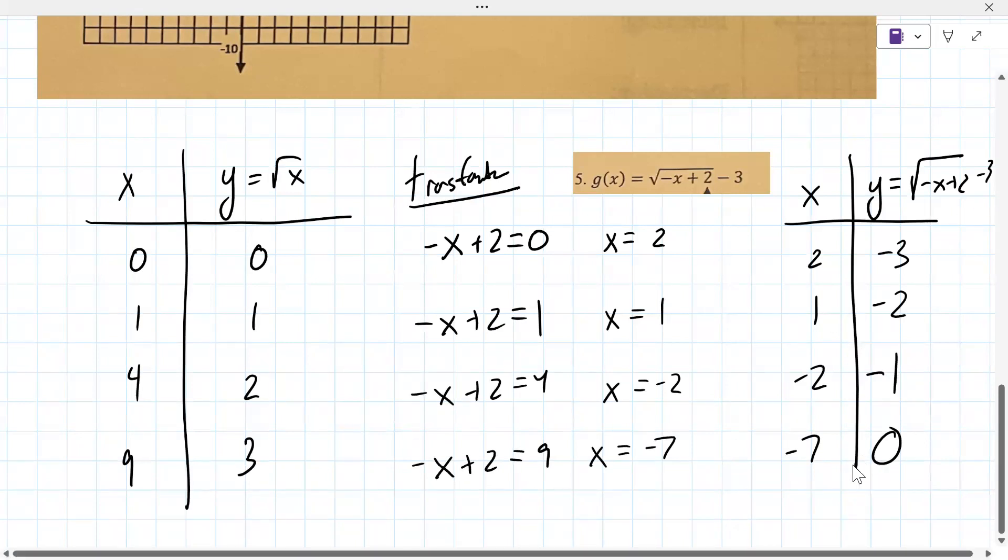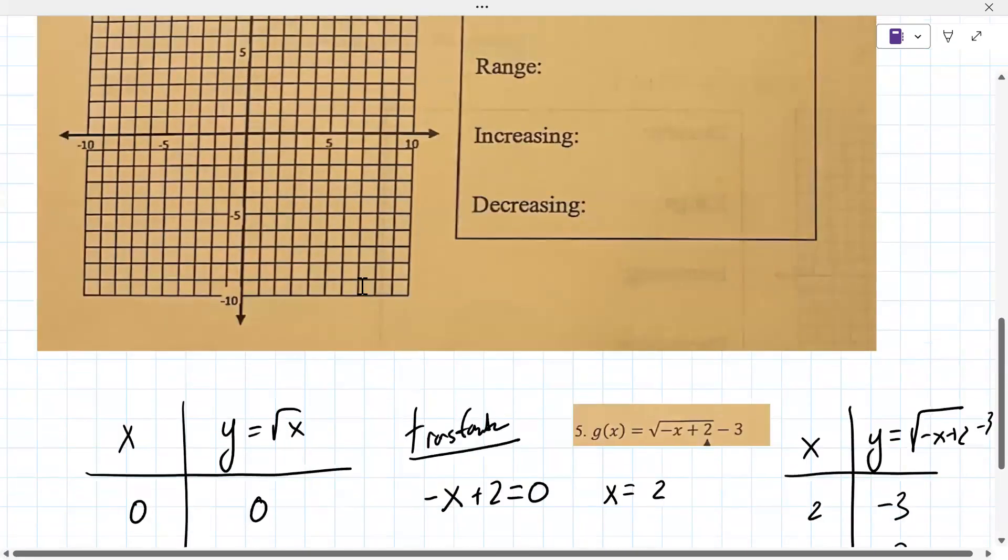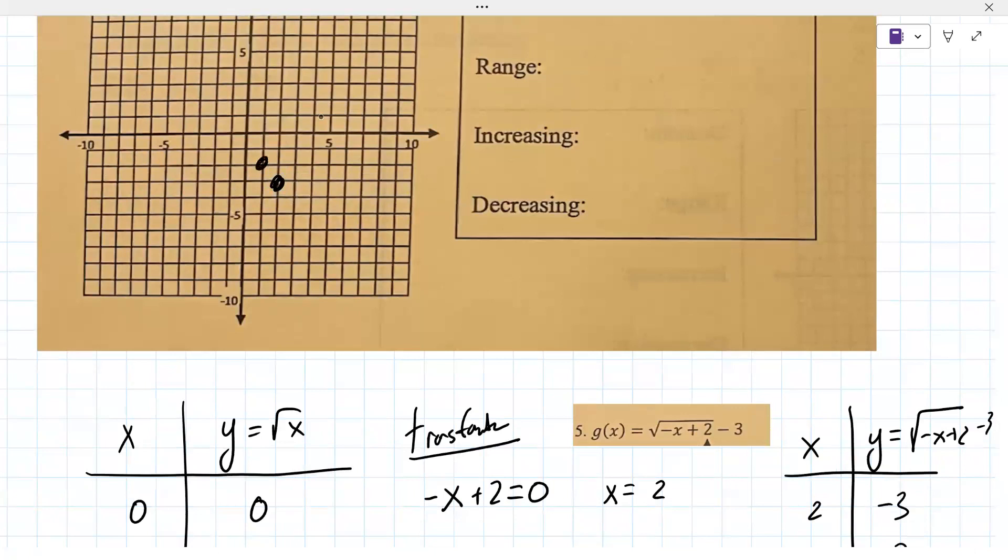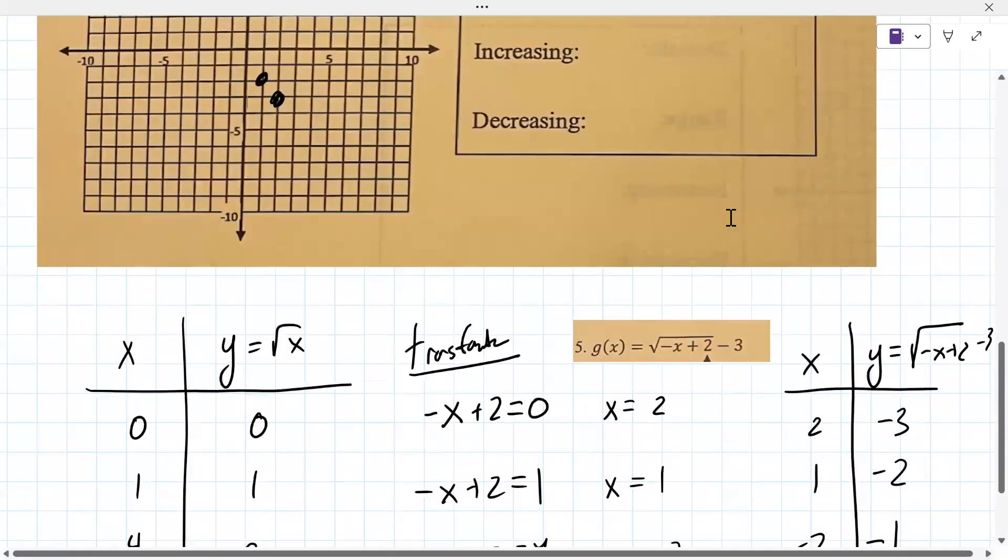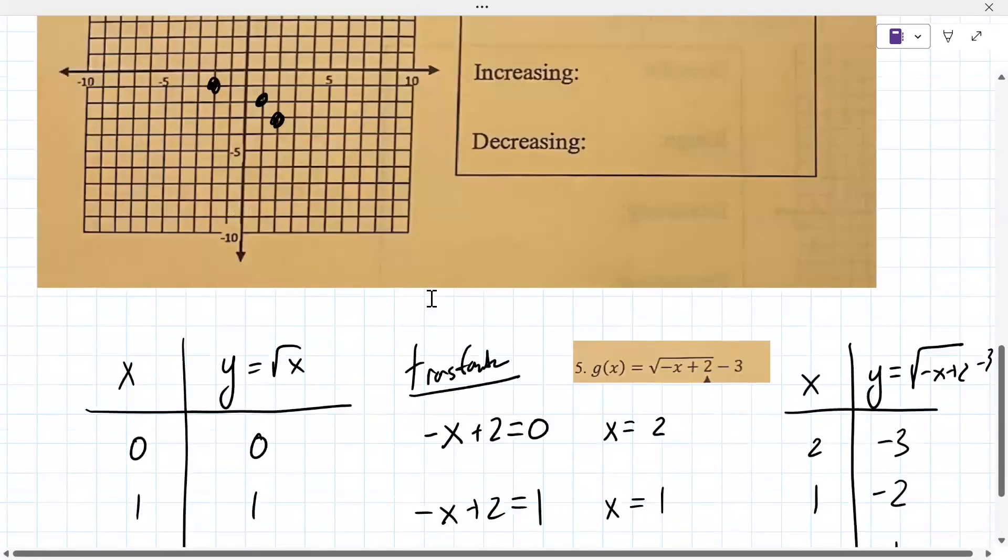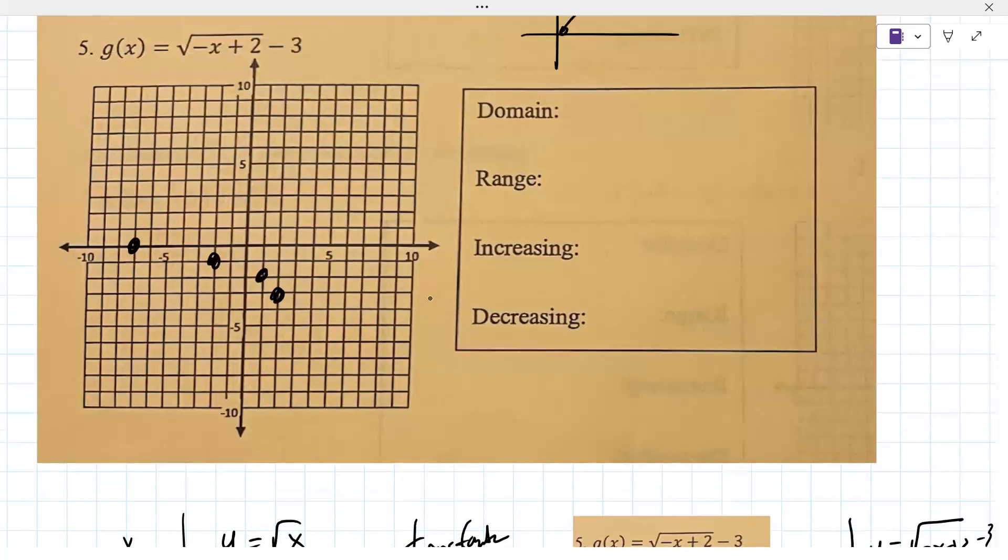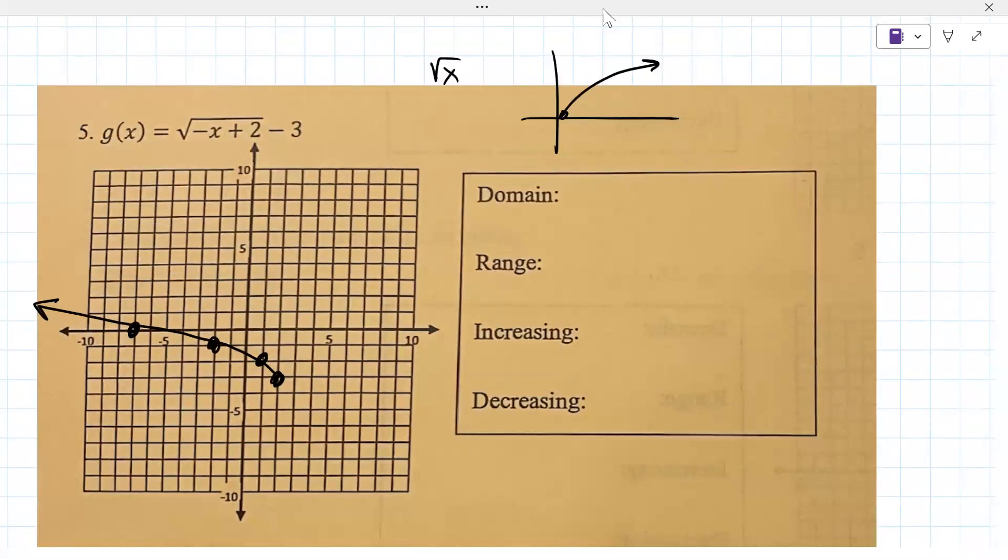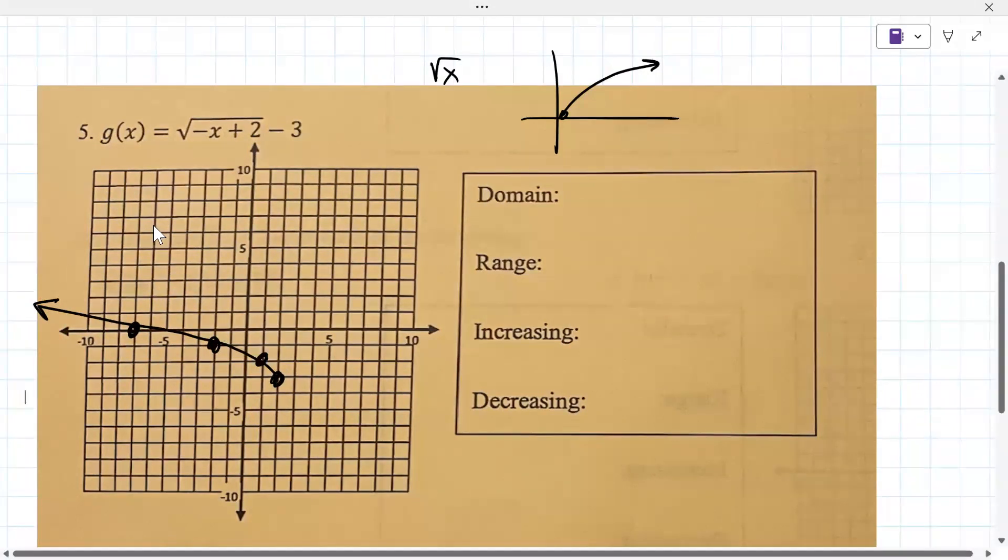Once you get some points here, you can then go back and graph it. So we're going to graph 2, negative 3. Then we're going to graph 1, negative 2. Negative 2, negative 1, and then negative 7, 0. What you have to remember with the root function is that it starts somewhere and goes. This one starts there and goes that way. The graph is so important because it actually answers all the questions.